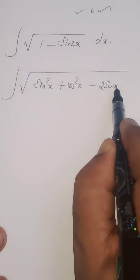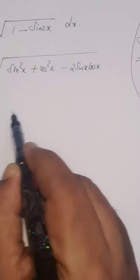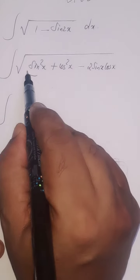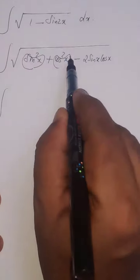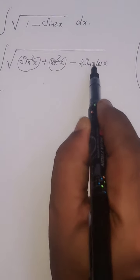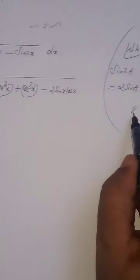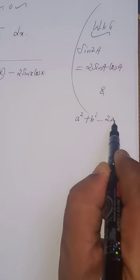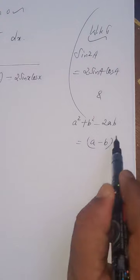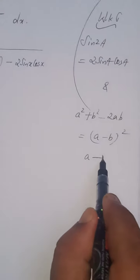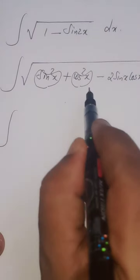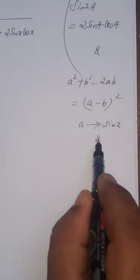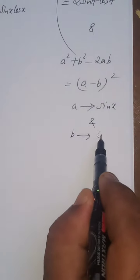This is of the form a squared plus b squared minus 2ab. We know that a squared plus b squared minus 2ab equals a minus b the whole square, where a is sin x and b is cos x.